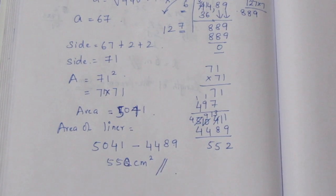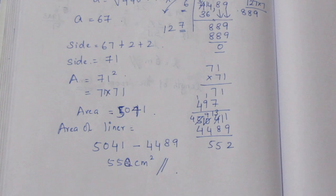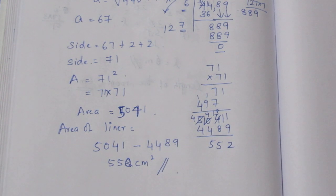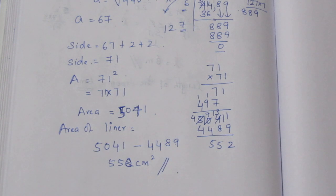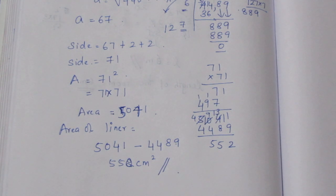This is the final answer. The area of the liner is 552 cm². Thank you.